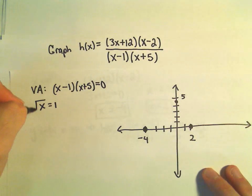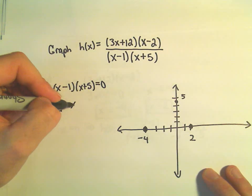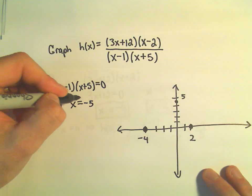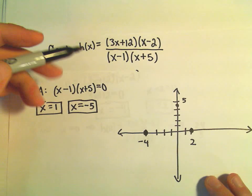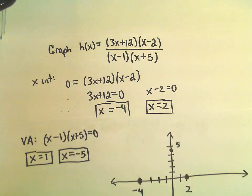the first factor will give us x equals positive 1 as a vertical asymptote. If we set the second factor equal to 0, we'll get x equals negative 5. And we know that this doesn't make the numerator 0 because we said negative 4 and 2 do that.